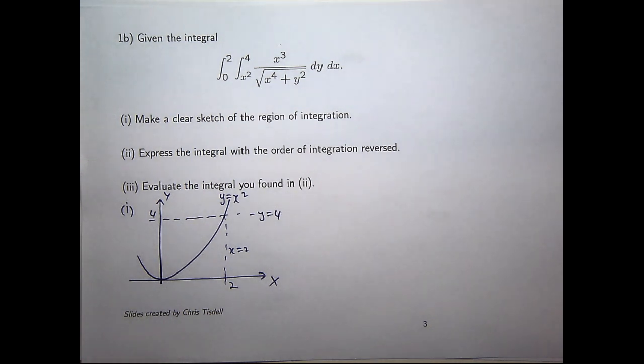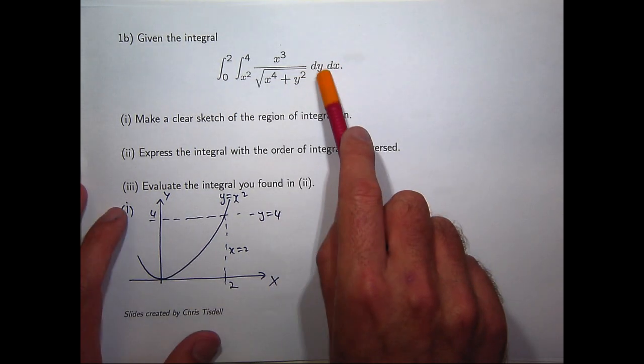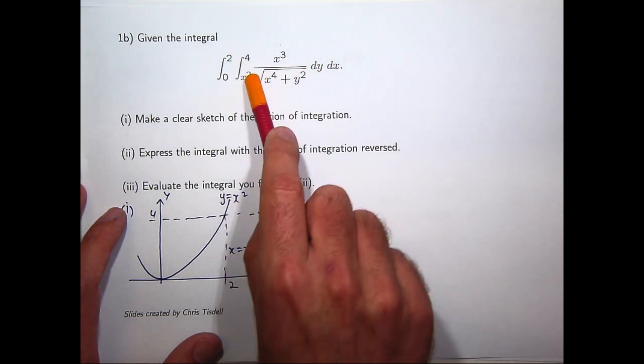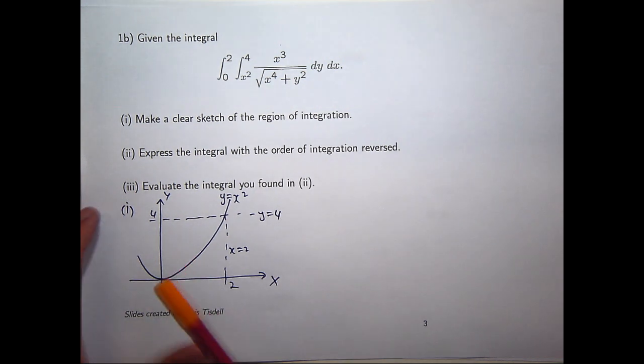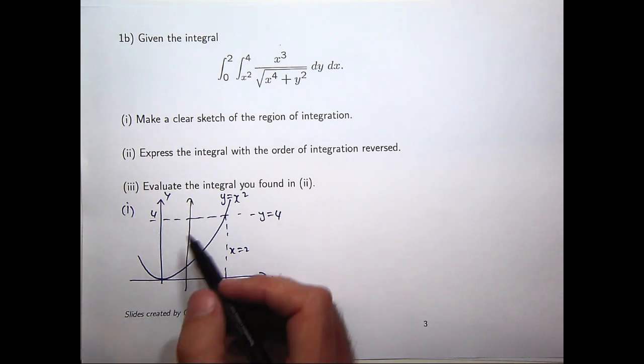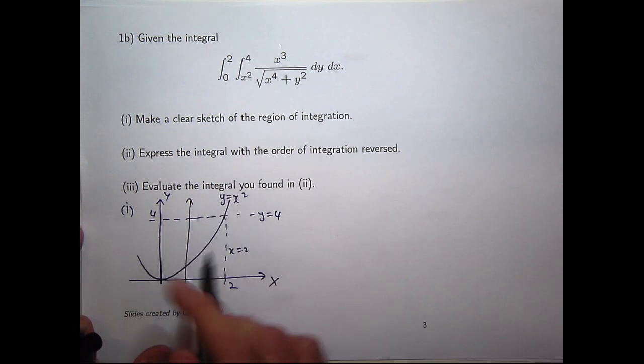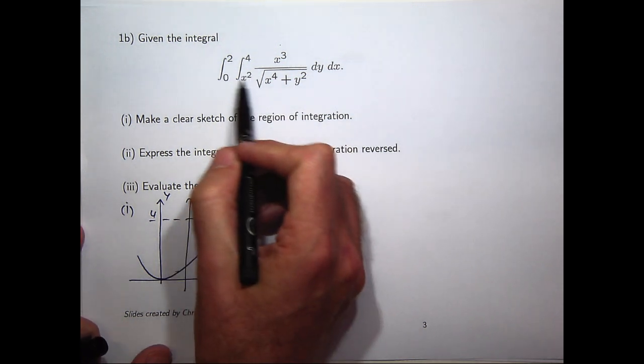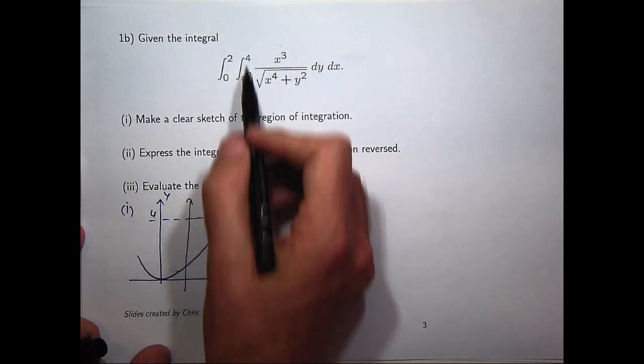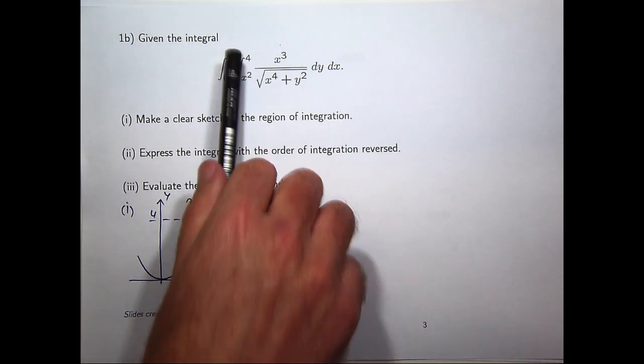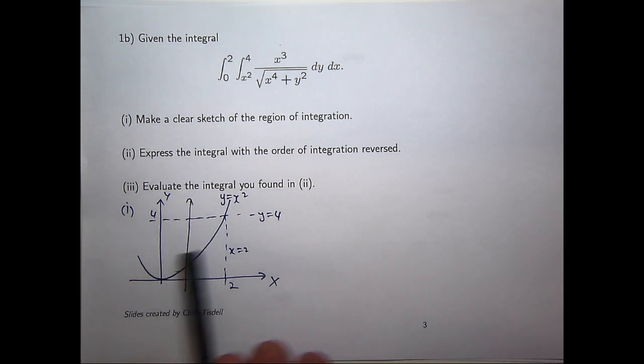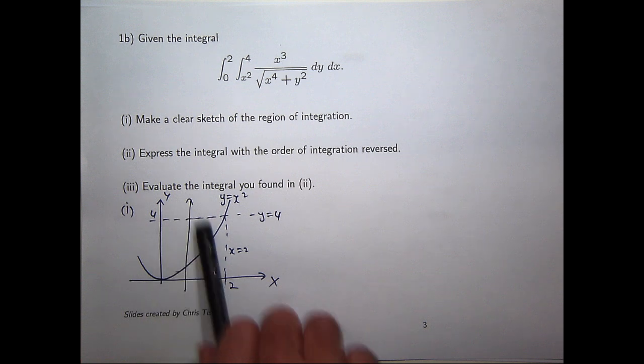So two potential regions present themselves there, either this region or this region. How do we know which one? Well, the y is between x squared and 4. So if I was to draw, say, a vertical line, you can see that this vertical line enters the top region at x squared, where the bottom limit of integration is, and leaves at this curve, at y equals 4, the top limit of integration. So actually, this is the region that we want.